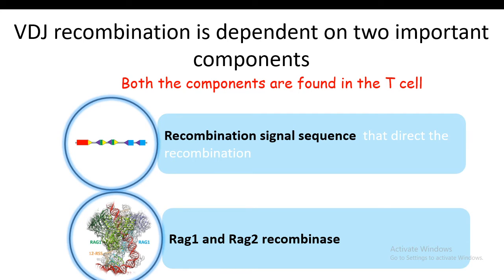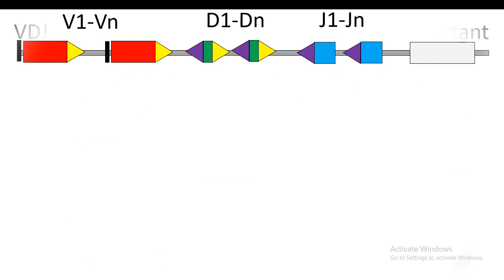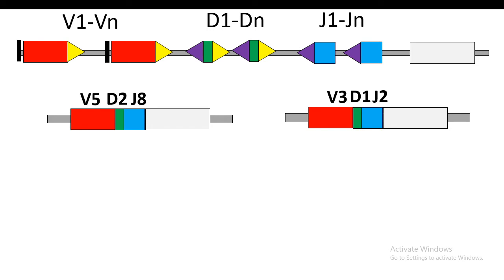Let me tell you what is the advantage of undergoing VDJ recombination and how diversity can be created. There are different types of V segments, D segments, and J segments. Let us assume that the V segments are actually V1 to Vn, D segments are D1 to Dn, and J segments are J1 to Jn. In each recombination event, different combinations of V, D, and J can be combined to form a new type of TCR receptor.